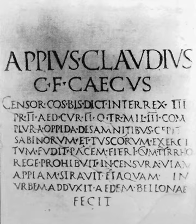There are two exceptions. A consonant cluster of a stop (P, T, C, B, D, G) followed by a liquid (L, R) between vowels usually goes to the syllable after it, although it is also sometimes broken up like other consonant clusters, as in 'volucris' which may be divided as 'vo.lu.cris' or 'vo.luc.ris'.